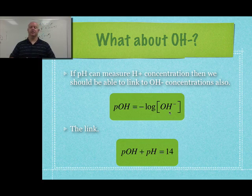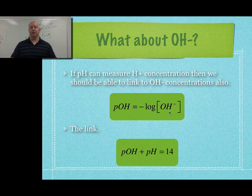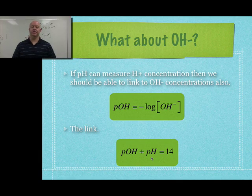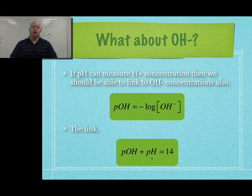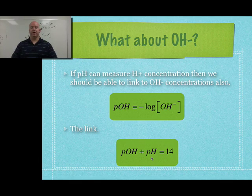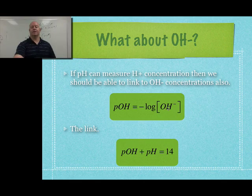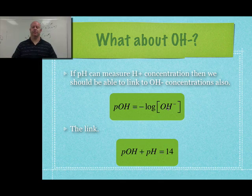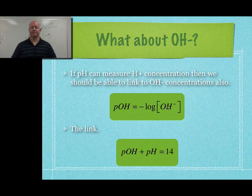And the beauty is this. If you know one, you always know the other. Because if you take the two values, the POH plus the pH, it equals 14. So whenever you're working with these, if you know the pH, you can find the POH, which then you can find the OH minus concentration. So it's kind of like ways of different pathways you can use to find different pieces of information for this process.